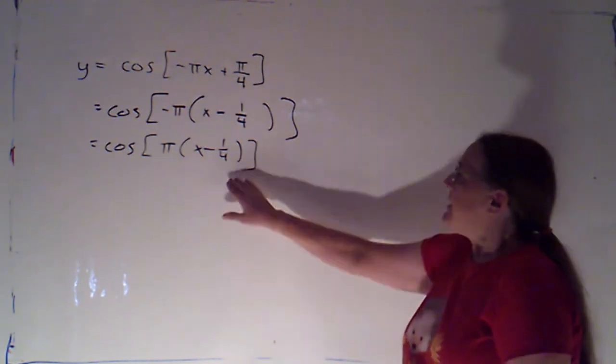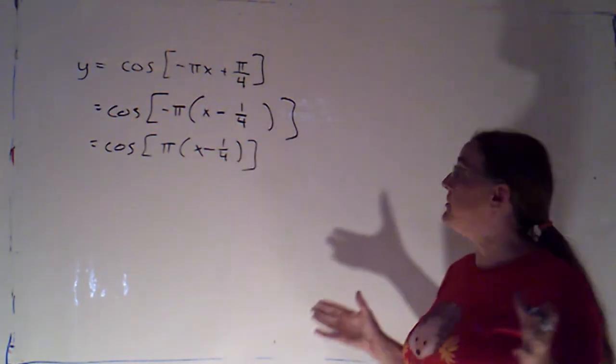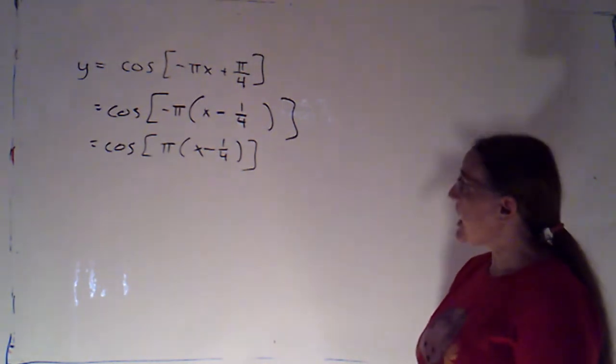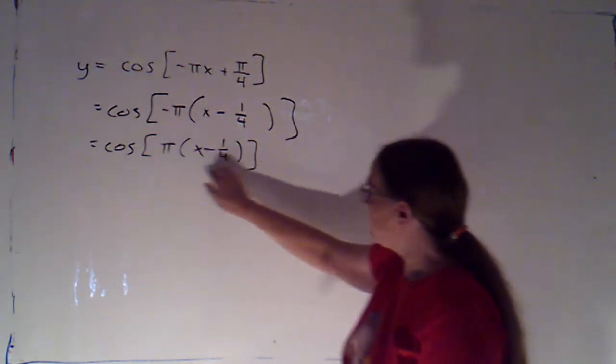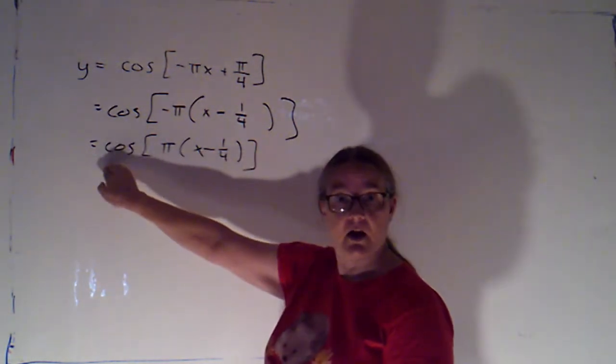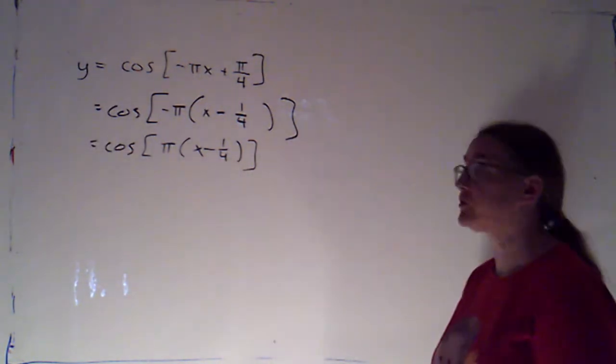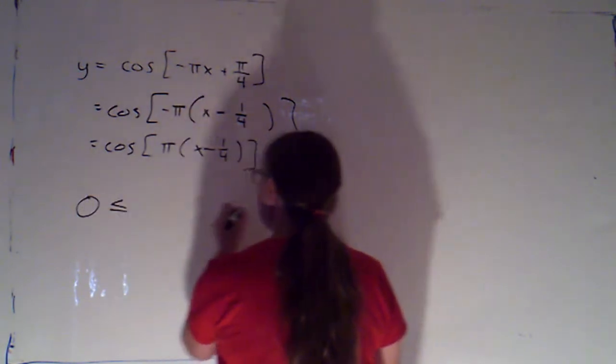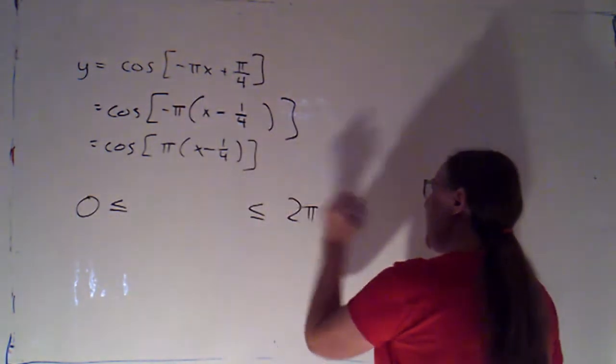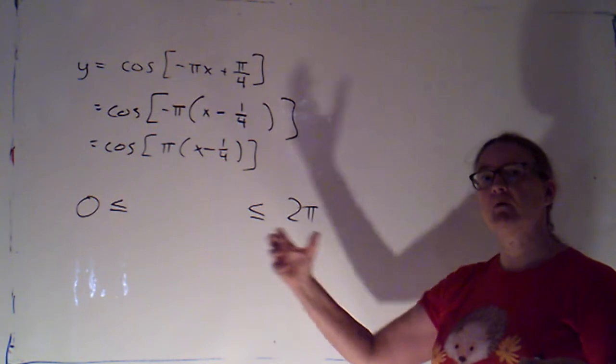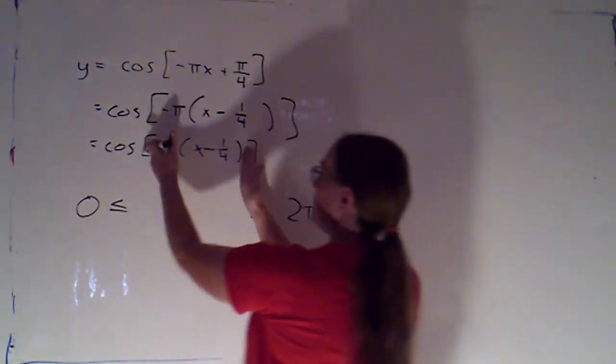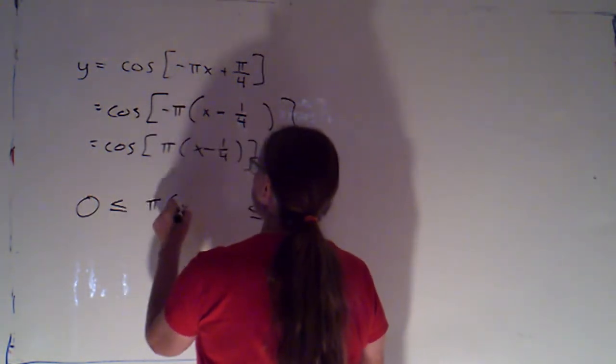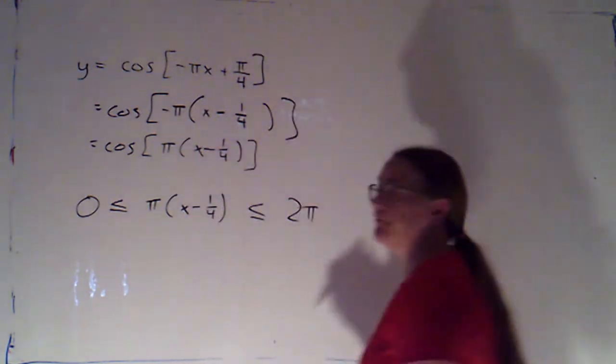Now, I want to graph this. I can see all of the stuff I'm doing, I'm doing before I plug into cosine. So, it's going to be giving me horizontal transformations. So, I'm going to use that trick that cosine does its thing once as the input varies from 0 to 2 pi. But that's my input, pi times x minus 1 fourth.